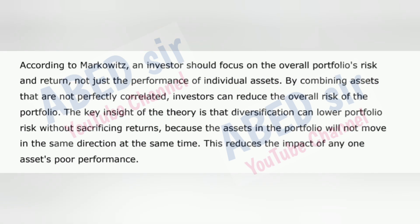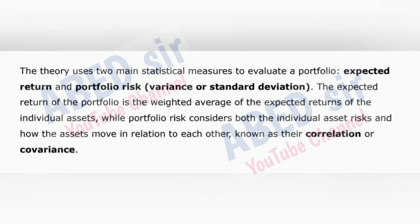According to Markowitz, an investor should focus on the overall portfolio's risk and return, not just the performance of individual assets. By combining assets that are not perfectly correlated, investors can reduce the overall risk of the portfolio. The key insight is that diversification can lower portfolio risk without sacrificing returns, because assets in the portfolio will not move in the same direction at the same time, reducing the impact of any one asset's poor performance. The theory uses two main statistical measures to evaluate a portfolio: expected return and portfolio risk.